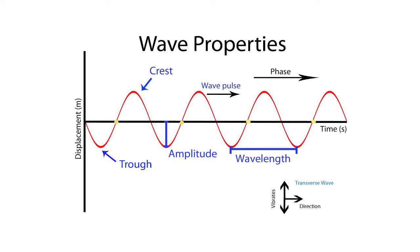The period is the time needed for an object to repeat one complete cycle of the motion, and the wavelength is the shortest distance between points where the wave pattern repeats itself. Any two points on a wave that are one or more wavelengths apart are in phase.